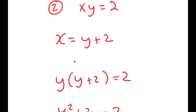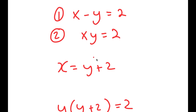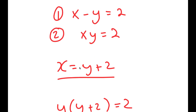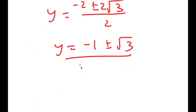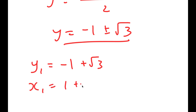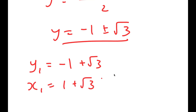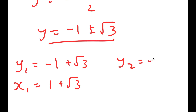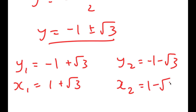And now using these two values, I want corresponding values of x. We already know that x is equal to y plus 2. So for y₁, we have negative 1 plus the square root of 3, so x₁ is this plus 2, which is 1 plus the square root of 3. And for y₂, we have negative 1 minus the square root of 3, so x₂ is going to be 1 minus the square root of 3.